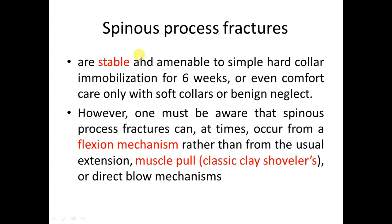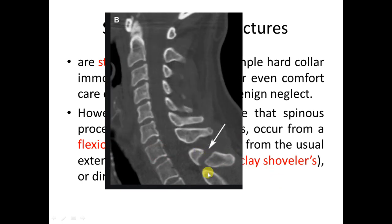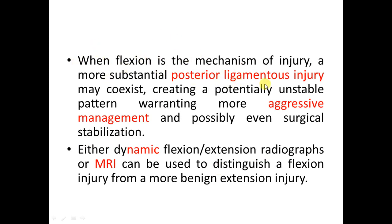Spinous process fractures are stable injuries, but important: if the mechanism is flexion rather than extension, posterior ligamentous injury must be excluded, as it is one of the main spinal stabilizers. MRI is mandatory for all spinal injuries. If there is no midline tenderness, MRI can be performed at follow-up clinic if symptoms persist. Clay-shoveler's fracture typically occurs at C6 or C7 due to powerful muscle pull, usually during digging. It is a flexion injury; posterior ligamentous injury is suspected and if confirmed, fixation may be needed.